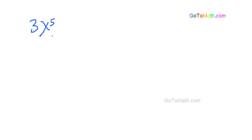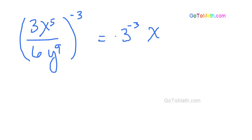3x to the 5th over 6y to the 9th, and it's all raised to something to negative 3. So we go through, alright. So we got 3, this is going to be to the negative 3. x, remember we multiply our exponents, that's negative 15.